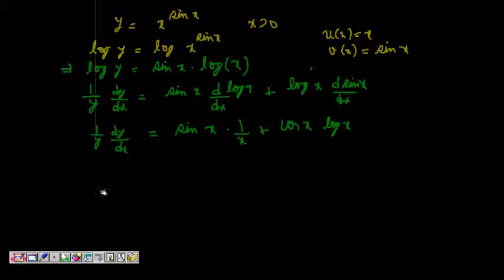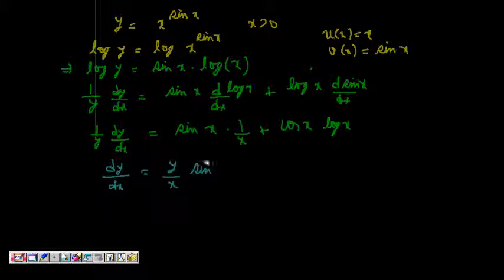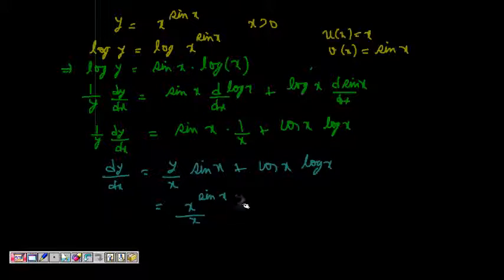So 1 by y times dy by dx equals sine x by x plus cos x times log x. Therefore dy by dx equals y times (sine x by x plus cos x log x). Since y equals x to the power of sine x, we get dy by dx equals x to the power of sine x times (sine x by x plus cos x log x).